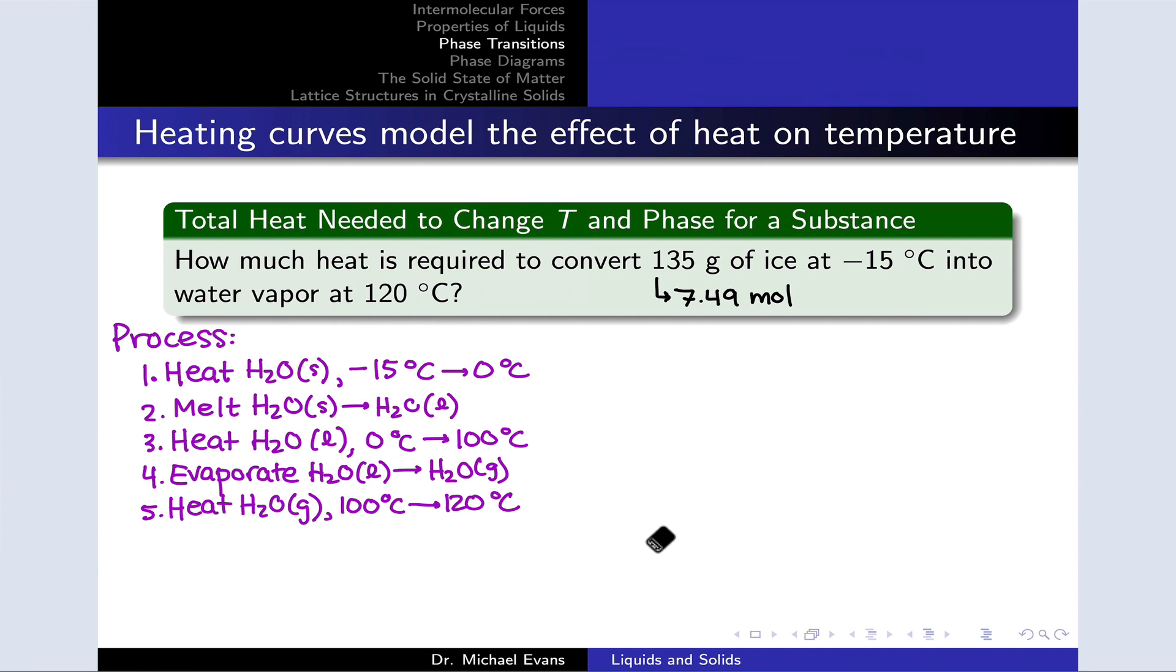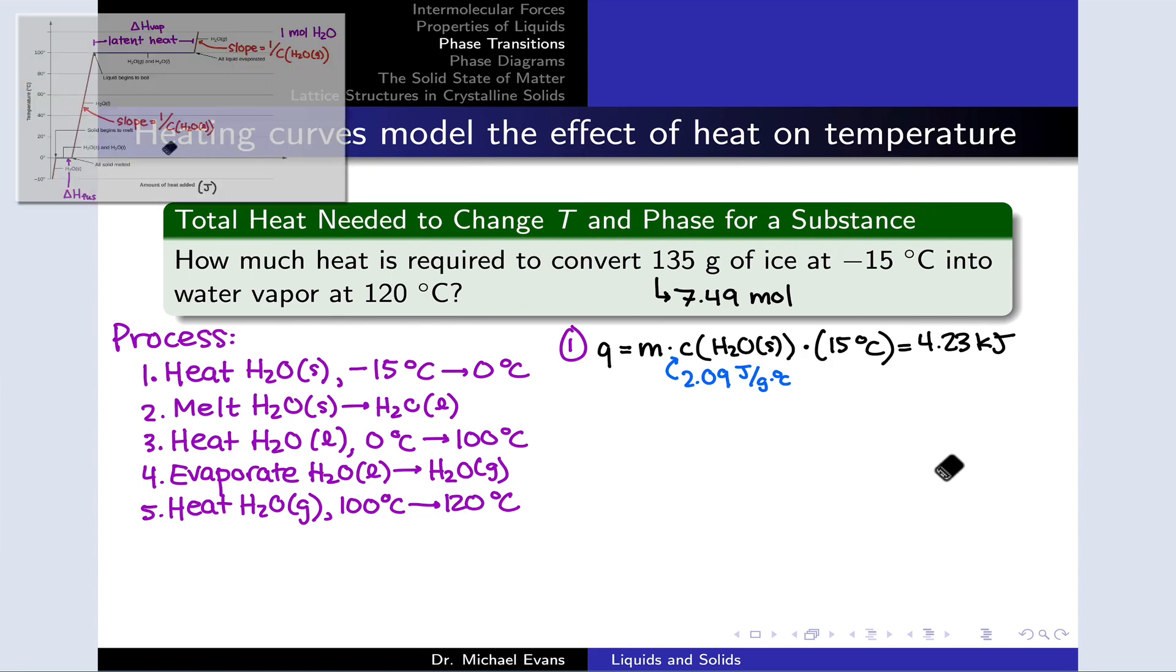On the heating curve, this corresponds to starting somewhere down here and riding up this sloped brown line up to the zero degree point right here, where the solid begins to melt. This is just going to involve an MC delta T calculation. So I know the mass, 135 grams. The heat capacity is for solid water, for ice. This is important. This number corresponds to the heat capacity of solid water, and the temperature change I'm interested in is 15 degrees C from negative 15 to zero. That gives us a value of 4.23 kilojoules.